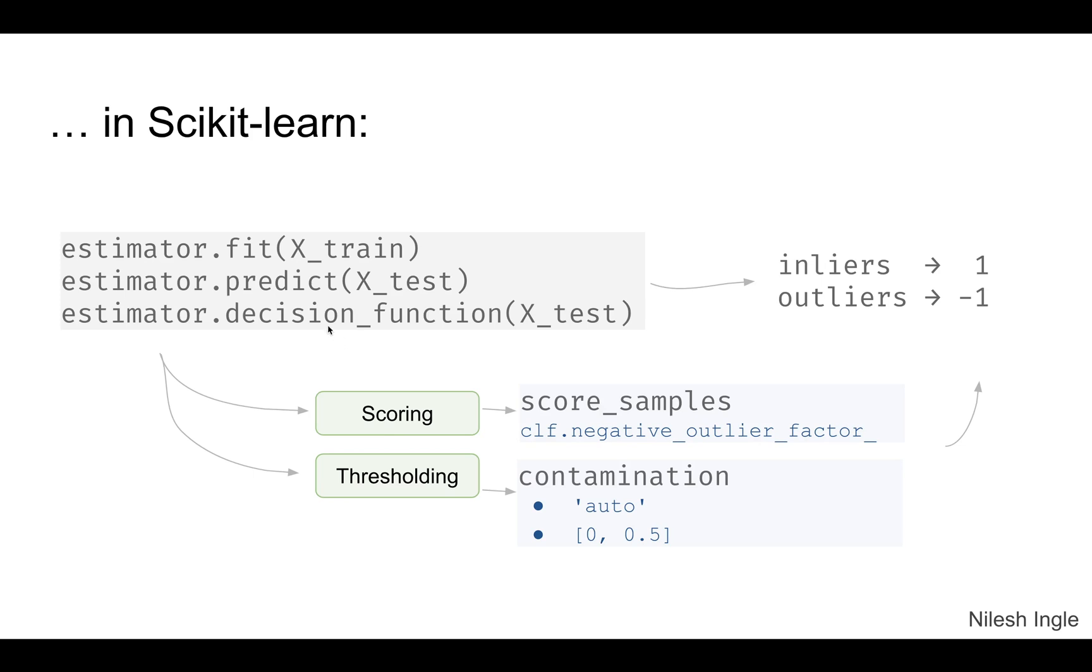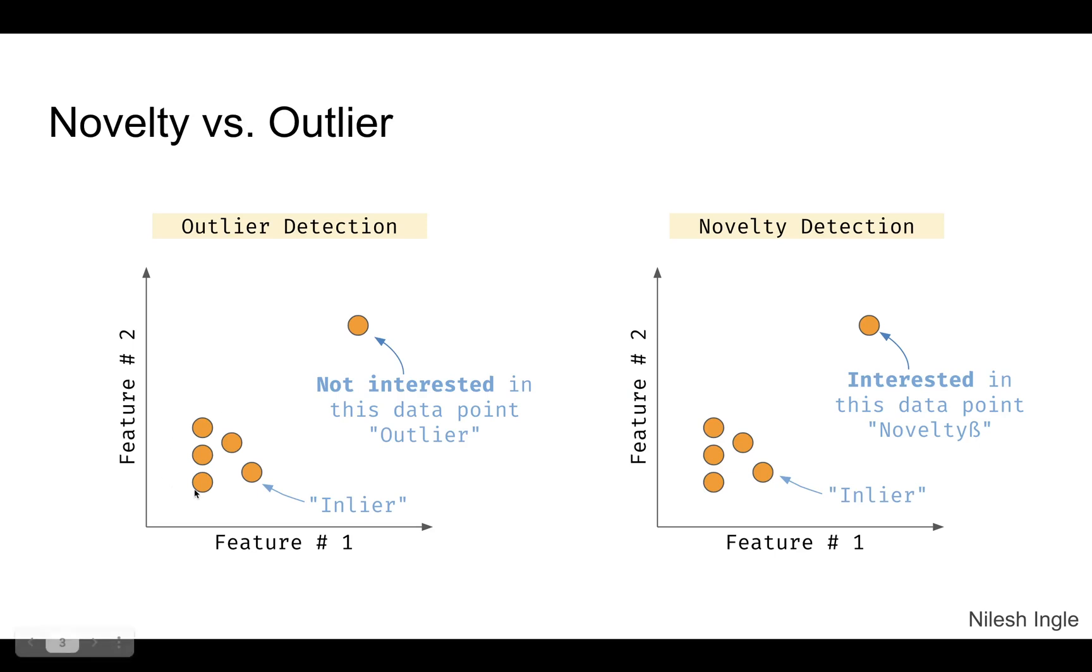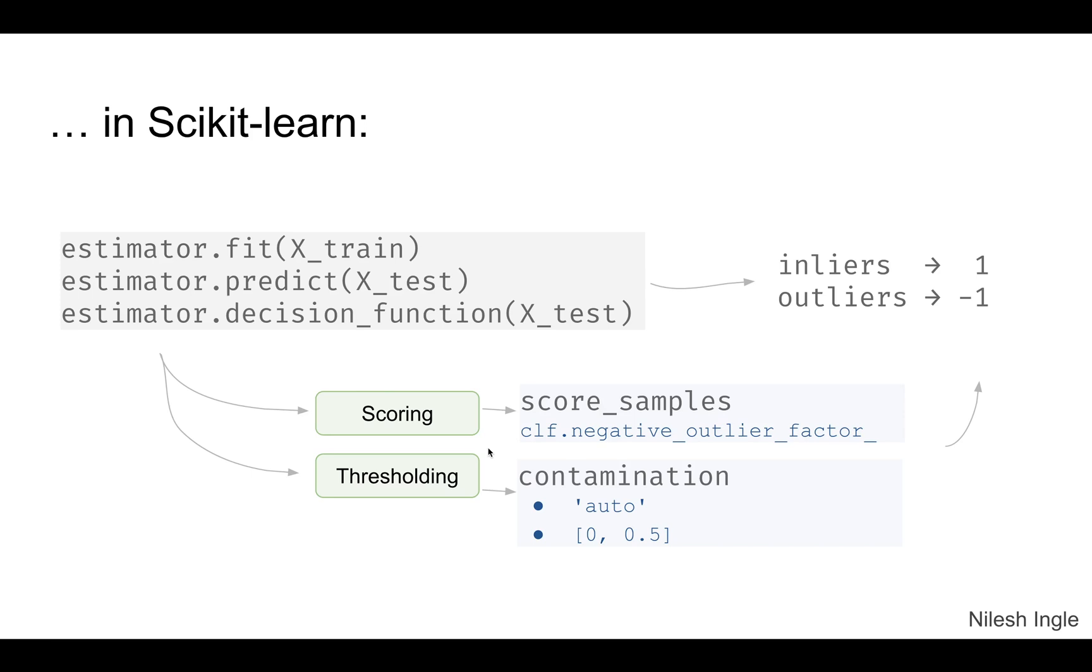In scikit-learn, the method is implemented by using fit, predict, and fit_predict as well, and there is decision_function. The output labels are one for inliers and minus one for outliers. So in this case these would be labeled as one and this would be labeled as minus one. And the way you can tune the thresholding of this is by using the contamination parameter, and you can get the output scores by using negative_outlier_factor_.